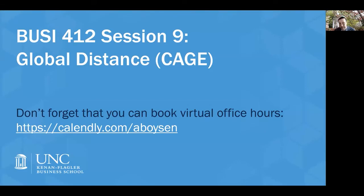Our topic for today is global distance, specifically the CAGE distance framework. This fits into our modules as follows: in our last session, where we started talking about global corporate strategy, we used the adding value framework, which was used specifically to think about different reasons for expanding internationally — using global corporate scope to increase volumes, decrease costs, and increase willingness to pay through differentiation. That provided us with reasons why global scope was important.